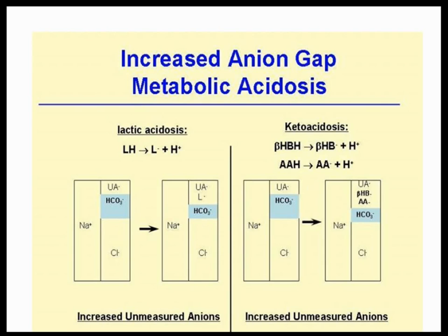Lactic acidosis and ketoacidosis are the two most important causes of high anion gap metabolic acidosis in clinical scenarios. Lactic acid acts as an unmeasured anion, and in ketoacidosis, acetoacetic acid and beta-hydroxybutyric acid are the unmeasured anions.